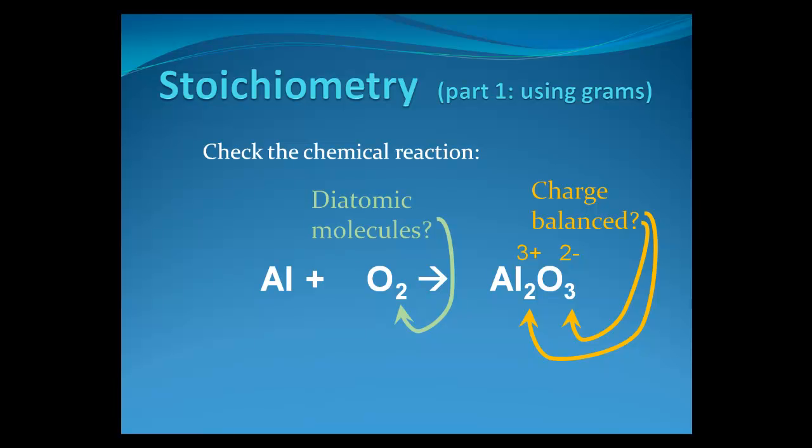Now, the third thing we need to do, if you look, is we have too many aluminums on one side and not enough on the other. It's not mass balanced. So we're going to mass balance this by putting coefficients in front of everything. We'll put a four in front of the aluminum, three in front of the oxygen, and a two in front of the aluminum oxide. That way, we have the right number of aluminums and the right number of oxygens on both the reactant and the product side.